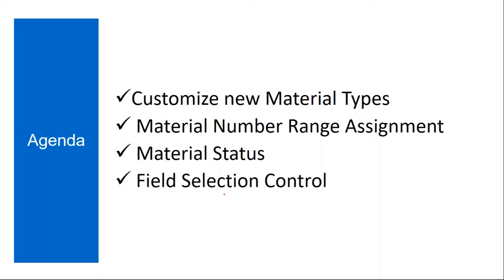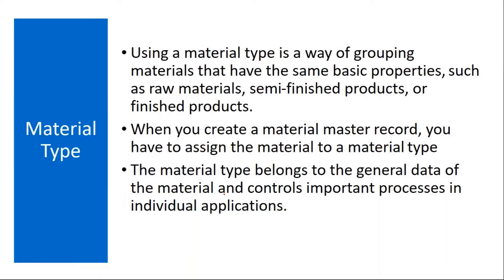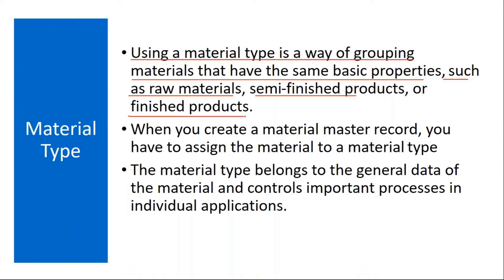This we discussed already. Using a material type is a way of grouping materials that have the same basic properties, such as raw materials, semi-finished products, or finished products. Whenever you create a material, you need to assign a material type to the material.